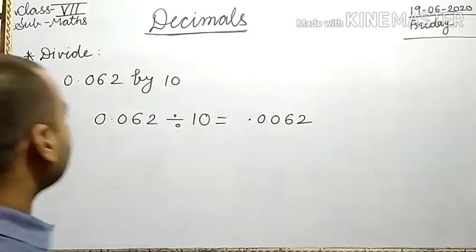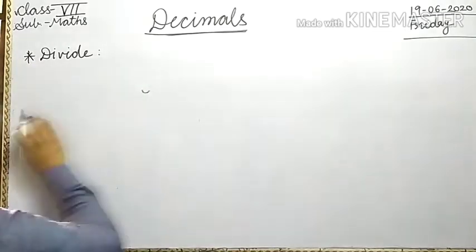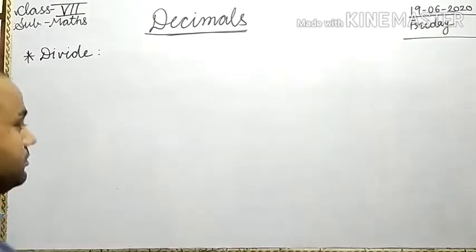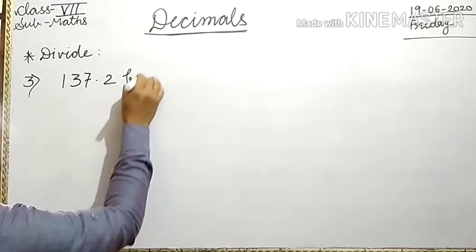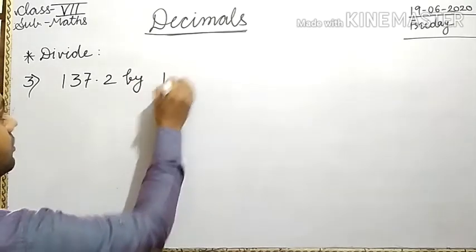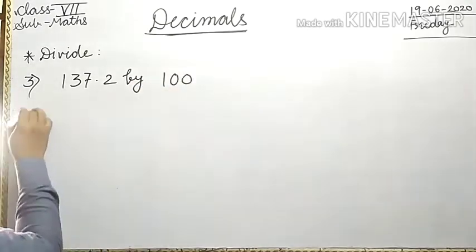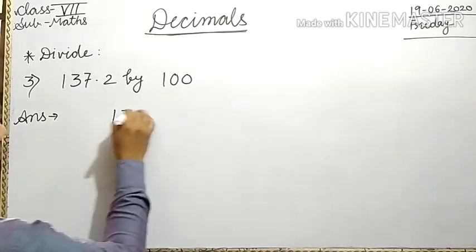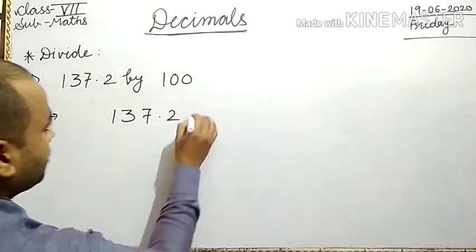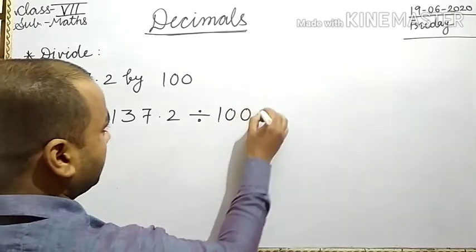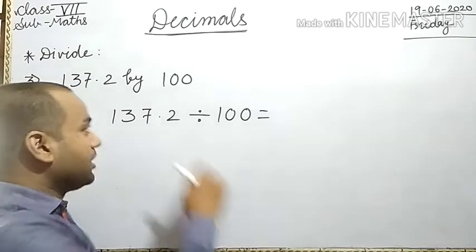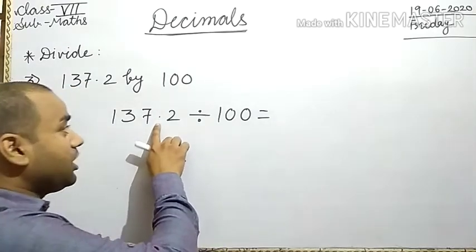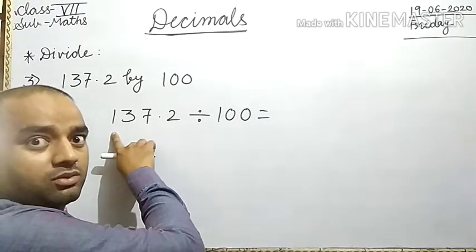Question number 3: 137.2 divided by 100. First we rewrite the question: 137.2 divided by 100. When divided by 100, shift the decimal point to the left by two places.